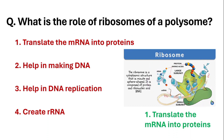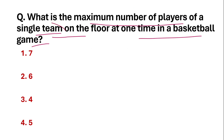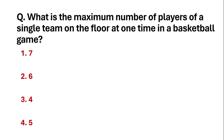What is the maximum number of players of a single team on the floor at one time in a basketball game? The maximum number of players on the floor from a single team is 5. The correct answer is 5.